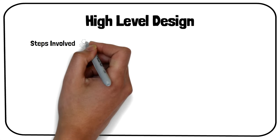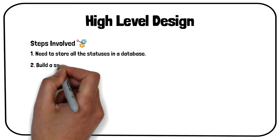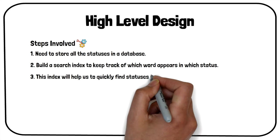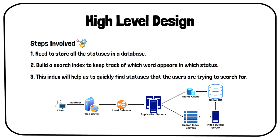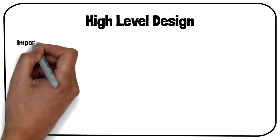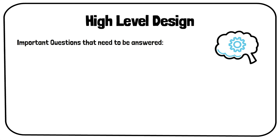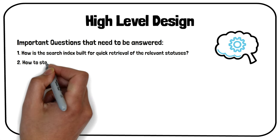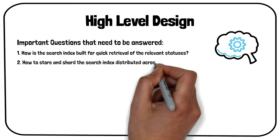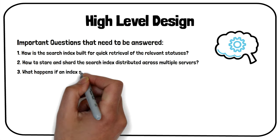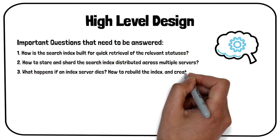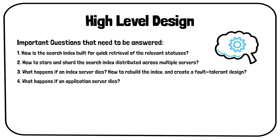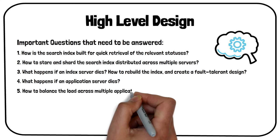At the high level, we will need to store all the statuses in a database and also build an index that can keep track of which word appears in which status. This index will help us to quickly find statuses that the users are trying to search for. Some of the important questions that need to be answered are: how is the search index built for quick retrieval of the relevant statuses? How to store and shard the search index distributed across multiple servers? What happens if an index server dies? How to rebuild the index and create a fault-tolerant design? What happens if an application server dies? How to balance the load across multiple application servers?